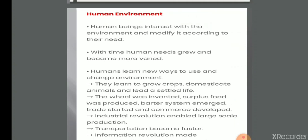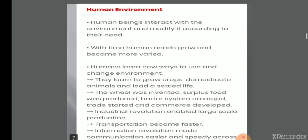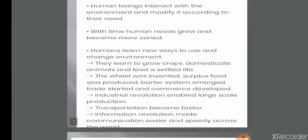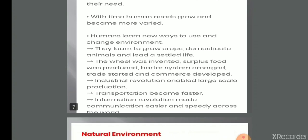Human beings interact with the environment and modify it according to their need. With time, human needs grew and became more complex. Humans learned new ways to use and change environment. They learned to grow crops, domesticate animals, and lead a settled life.